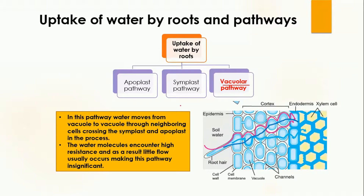The vacuolar pathway involves the entry of water into the vacuole of adjacent cells, which are responsible for the transport of water. In this pathway, water moves from vacuole to vacuole through neighboring cells, crossing the cytoplasm and apoplast. In this diagram, the dark blue line shows the vacuolar pathway — water moves from one vacuole to another vacuole of the adjacent cell.